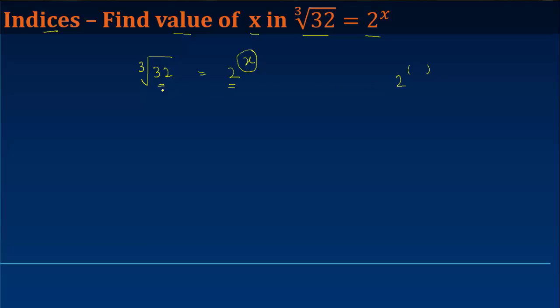I first find out what can 32 be written as. 32 can be written as 2 to the power 5. So, I can also write this left-hand side as third root of 2 to the power 5.